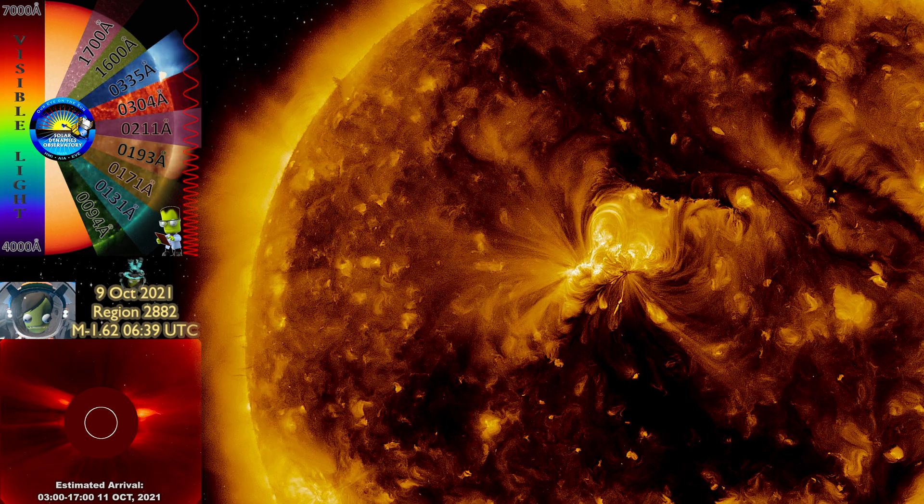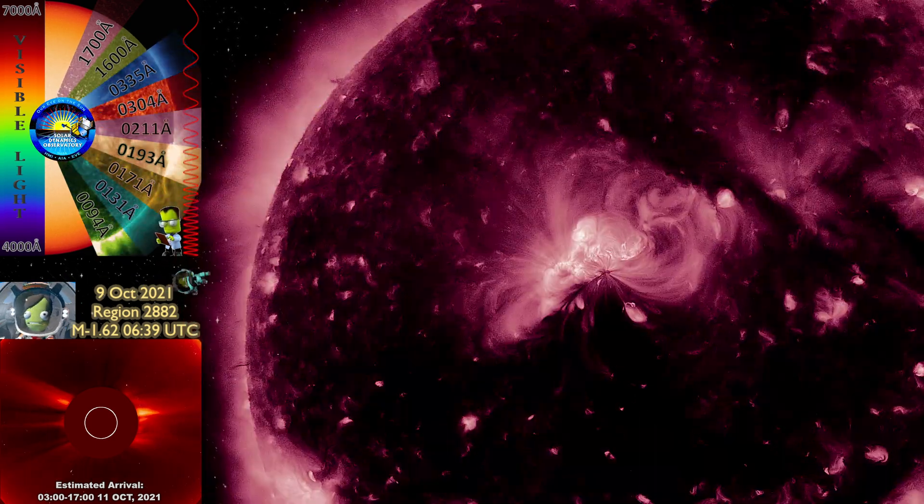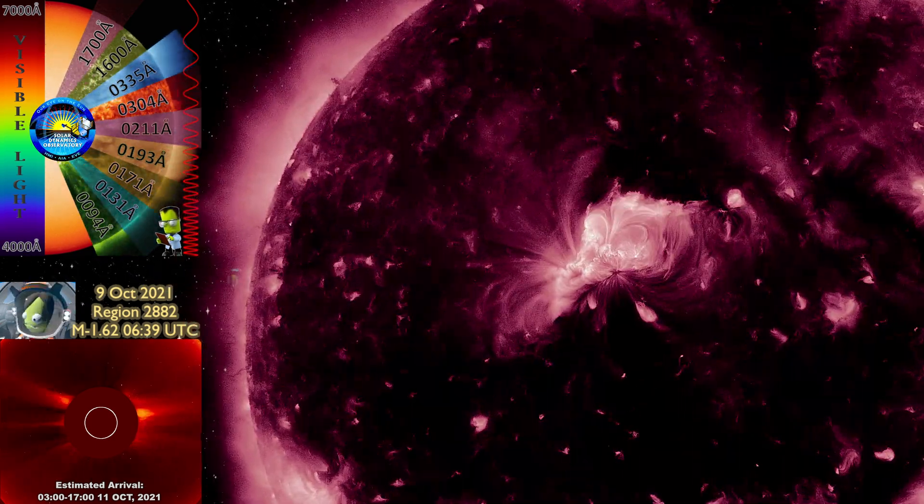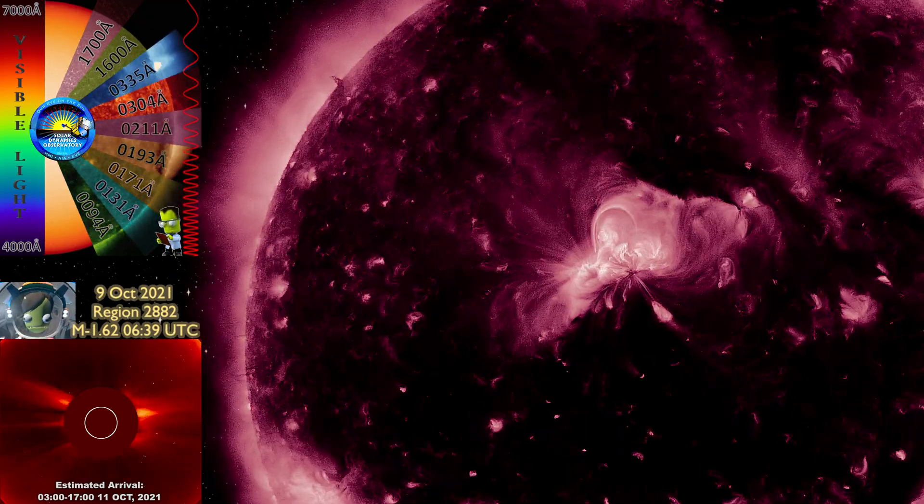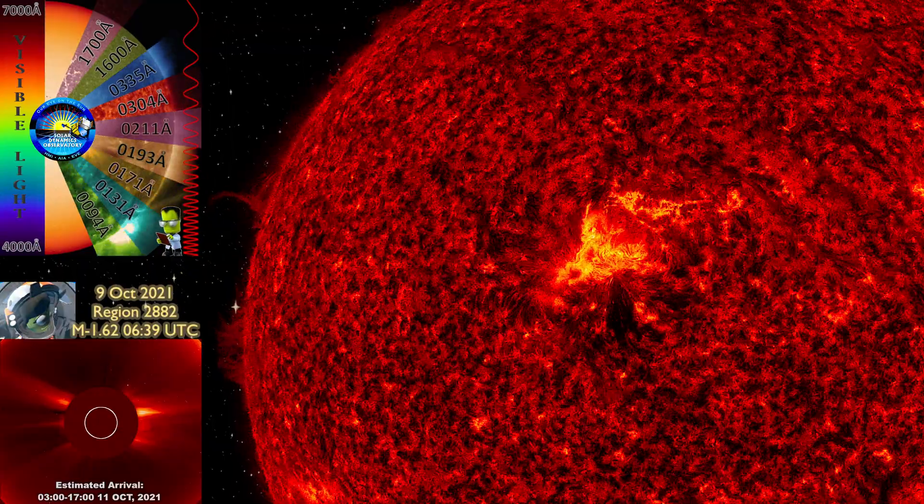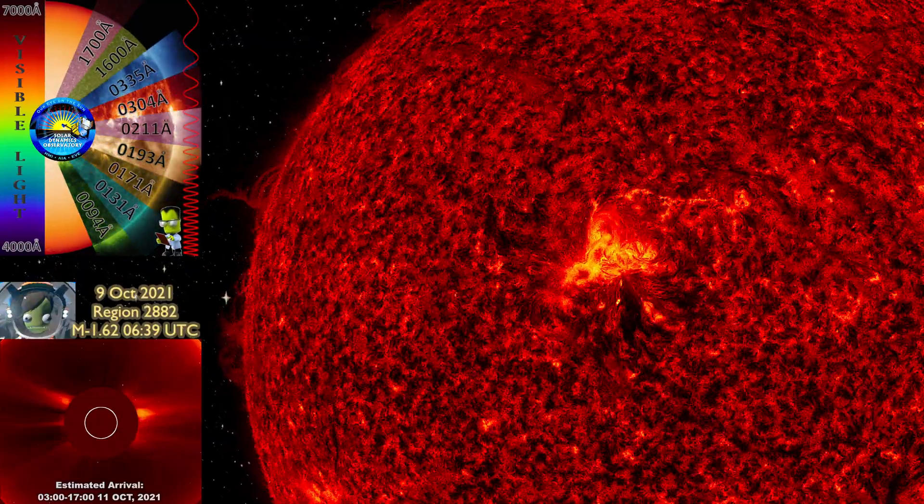It is not outside the realm of possibility that this coronal mass ejection, in conjunction with C-class solar flares that occurred prior and the high density band that will be impacting Earth as well, could lead to a G2 geomagnetic storm.